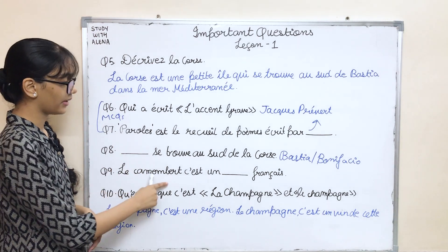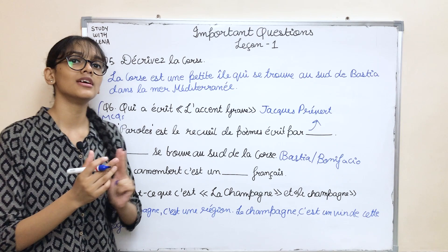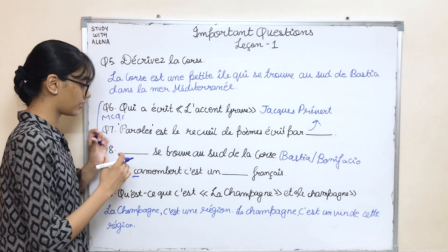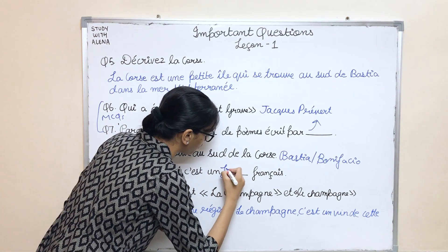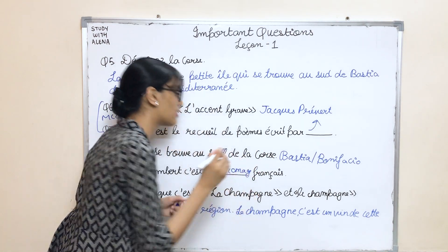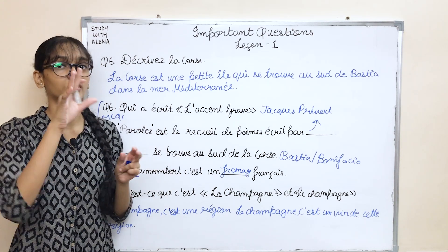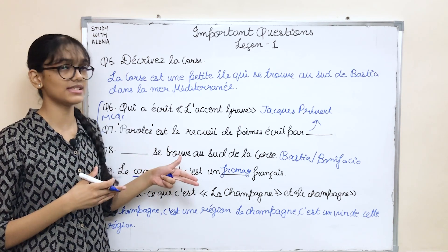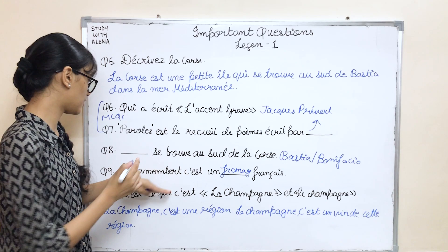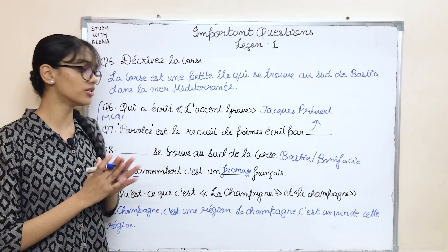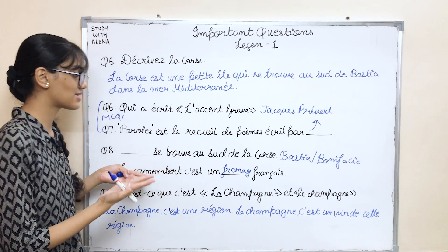For the ninth question: 'Le camembert c'est un dash français.' This was on page number seven, where some words were written with a capital C and others with a small c, each with a different meaning. The answer is 'fromage' — it's a cheese from France. This is not a very frequently asked question but a possible one. You can skip it at your own risk, but it can come as an MCQ, and you have the option to attempt a limited number of MCQs.